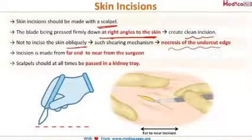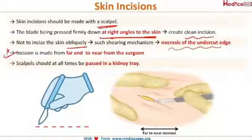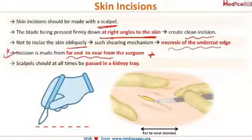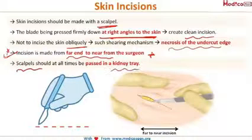A very important point to remember is that the incision is always made from the far end to the near end from the surgeon. This means if you are right-handed you will start the incision from the left side to the right side, and if you are left-handed you will start from the right side to the left side — automatically meaning you start from the far end to the near end. Lastly, all surgical blades and scalpels should be passed in a kidney tray.